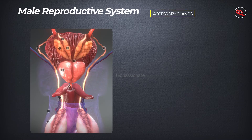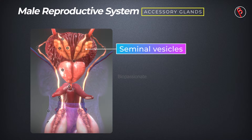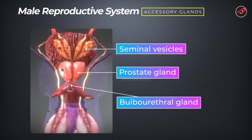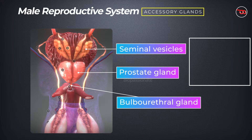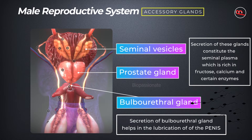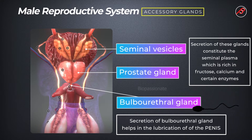The male accessory glands include a pair of seminal vesicles, a prostate gland, and paired bulbourethral glands. The secretions of the seminal vesicles and prostate gland constitute the seminal fluid called seminal plasma, which is rich in fructose, calcium, and certain enzymes.